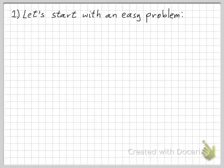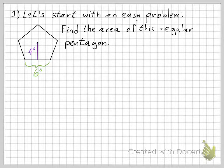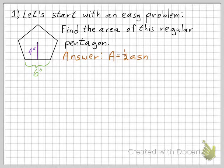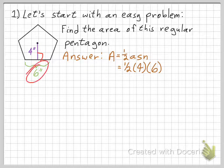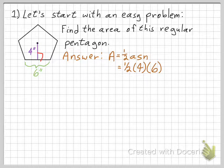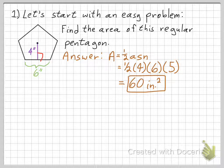Let's start with an easy problem: find the area of this regular polygon. The formula for the area of a regular polygon is one-half ASN. The apothem is the distance from the center of the figure perpendicular to the side, and the side length is given as 6. This is a pentagon — a five-sided figure — so N equals 5. Everything is given, and if you multiply that out, you get 60 square inches.